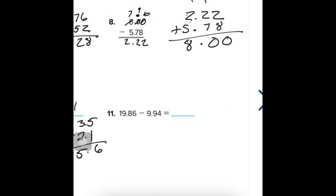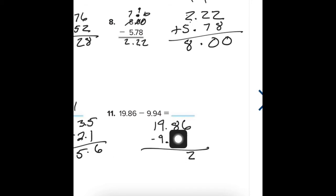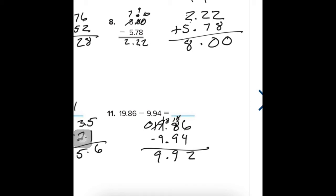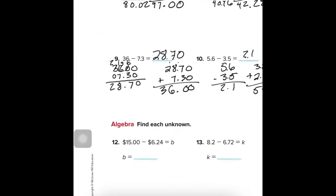Number 11: I'm going to write it over here. 19.86 minus 9.94. Line up the decimals — there's a 9 on this side and 94. From 6 take 4, so 2 left over. I cannot take 9 from 8, so I borrow. Then I cannot take 9 from that 8 either, so I turn that to 0 and make it 18. Answer is 9.92. Adding 9.92 plus 9.94 gives back the original problem.